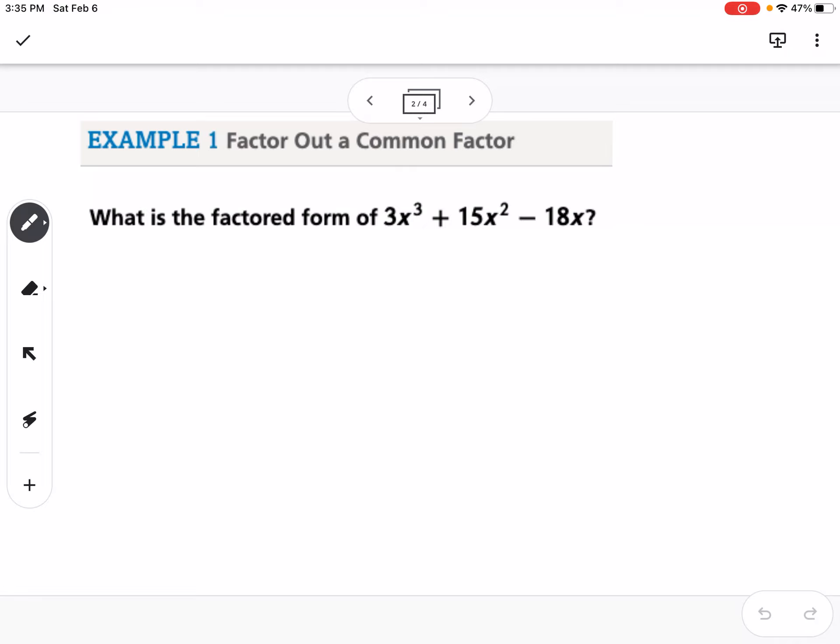So if we factor all of these terms, 3x cubed would be 3 and we have 3x's, then 15 is 5 times 3 and 2x's, and then 18 would be 2 times 9, and 9 is 3 times 3, and we have an x. So what do all of these have in common? They have a 3 and an x in common. So that means that our GCF is 3x, and then we write what's left over, so that would be x squared plus 5x minus 2 times 3, so minus 6.